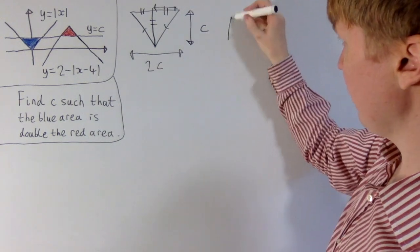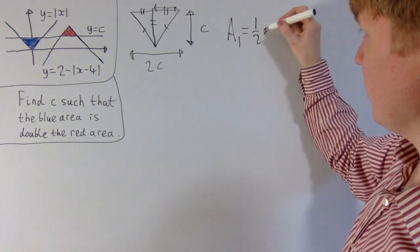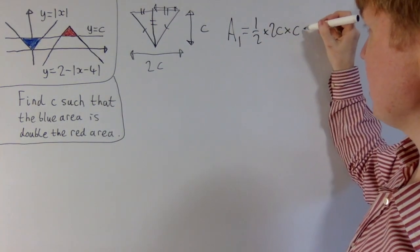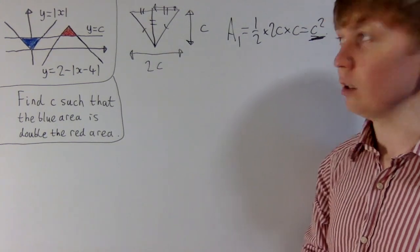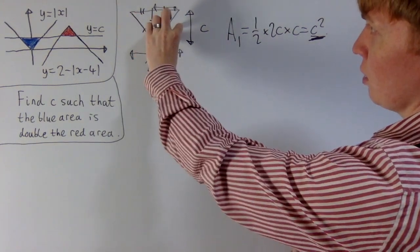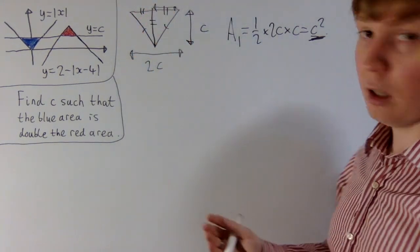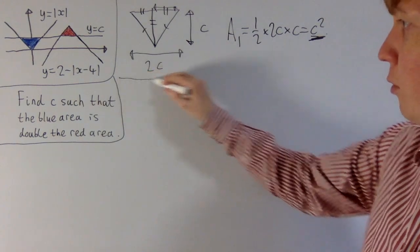So what does this tell us? If we call a1 our blue area, this is a half times the base 2c times c, or c squared. So that's a nice expression for our first area for the blue area. You can also see this because you can imagine moving this triangle over here, then we have a square of side length c. So you can see the area is c squared for our first area.